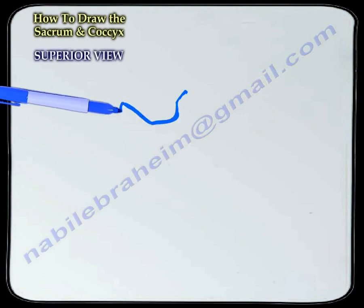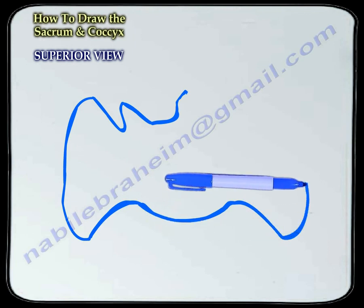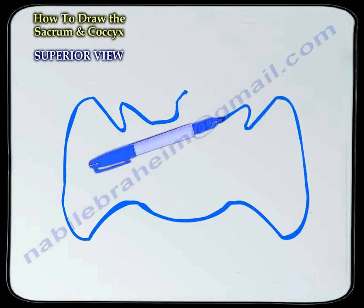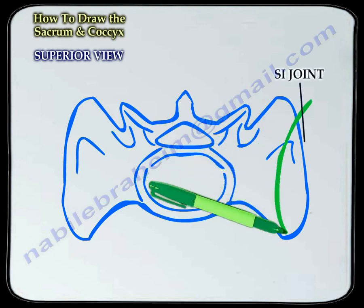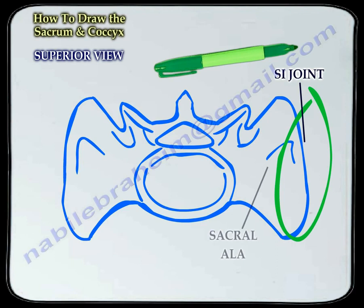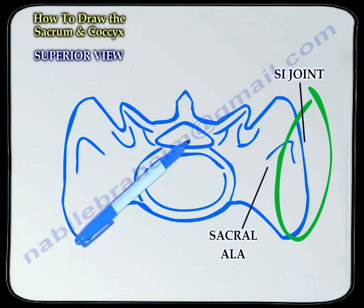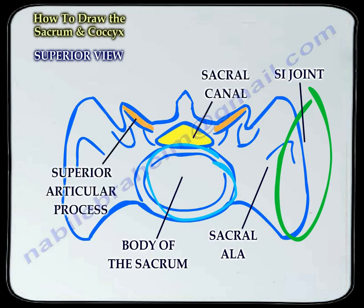This is a superior view of the sacrum, which looks like an inlet view in an x-ray. Here you can see the sacroiliac joint, the sacral ala, the body, the sacral canal, the superior articular facets of the sacrum, and the median sacral crest.